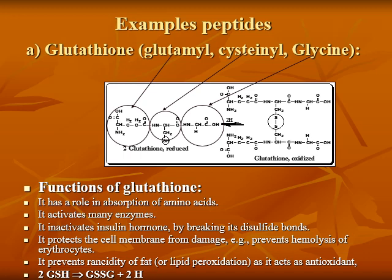Functions of glutathione: it plays a role in absorption of amino acids, activates many enzymes, and inactivates some hormones such as insulin by breaking down disulfide bonds. It protects cell membranes from damage and prevents hydrolysis of erythrocytes. It prevents rancidity of lipids or lipid peroxidation, acting as an antioxidant. Reduced glutathione is the active form; oxidized glutathione is the inactive form.